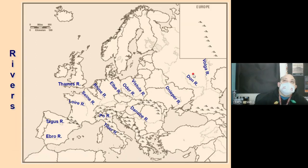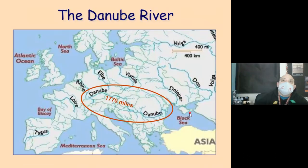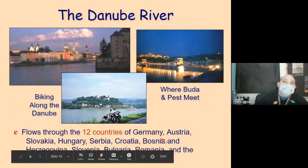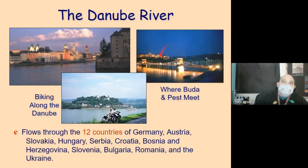The Danube is 1,770 miles long and flows through 12 countries. Here's what it looks like — this is where Buda and Pest meet, making Budapest, the capital of Hungary. You can see castles built along the river, and there's biking along the river as well. These rivers are very important — industrial complexes build up near them.